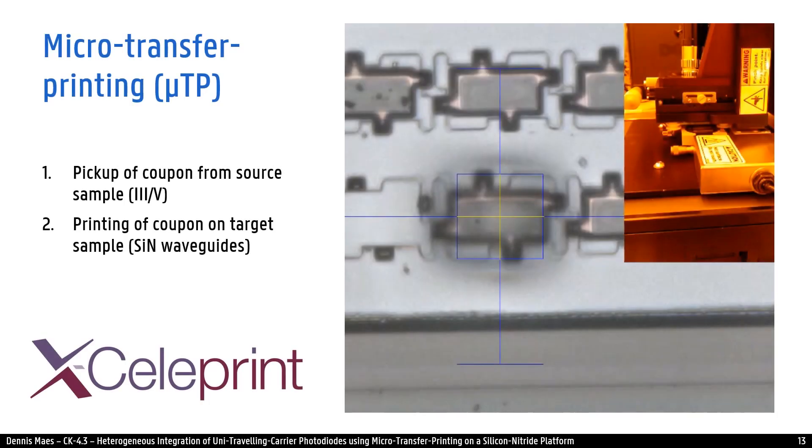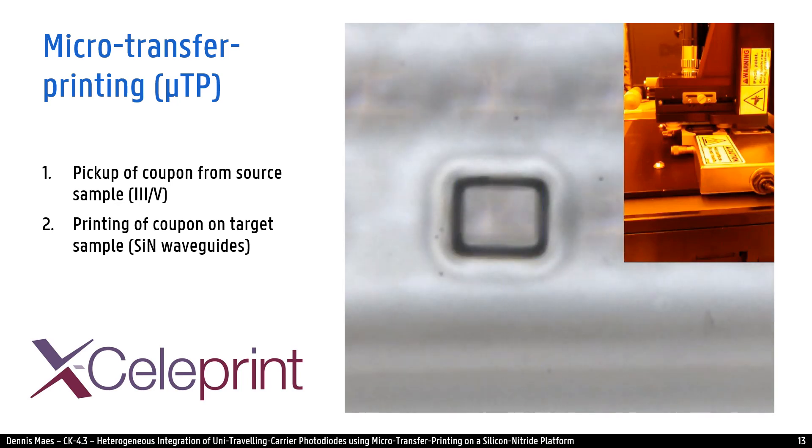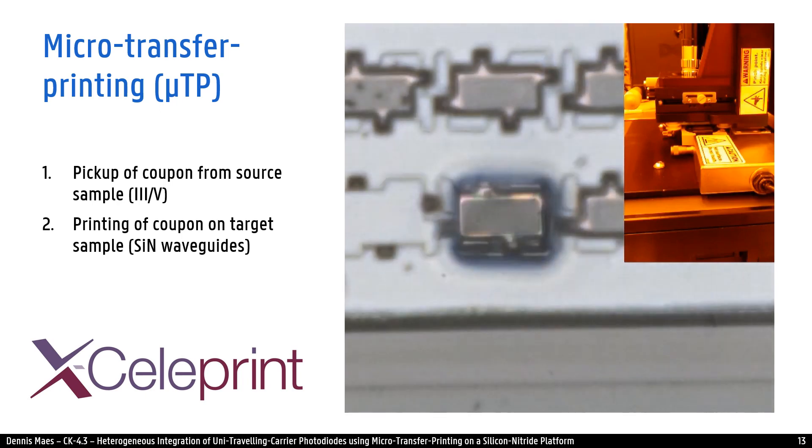Now the sample is ready to be transfer printed using the X-celeprint transfer printing tool. In the first step the coupon will be picked up from the source.